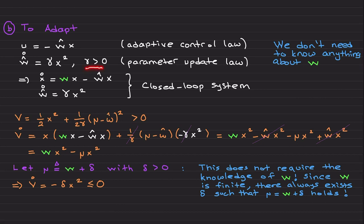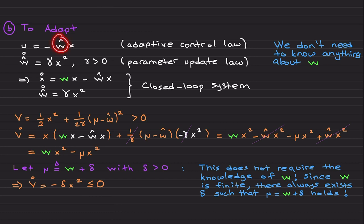Here γ is the learning rate — a positive constant that can range from 0.001 to 1000 depending on your processor's requirements. The key thing about adaptive control: you don't need to know anything about w. In robust control you need the upper bound on uncertainty; here with adaptive control you need no such knowledge. This is your very first adaptive control law, and the parameter update law is a differential equation for ŵ. Since you don't know the uncertainty, the initial condition for ŵ can be chosen as zero.